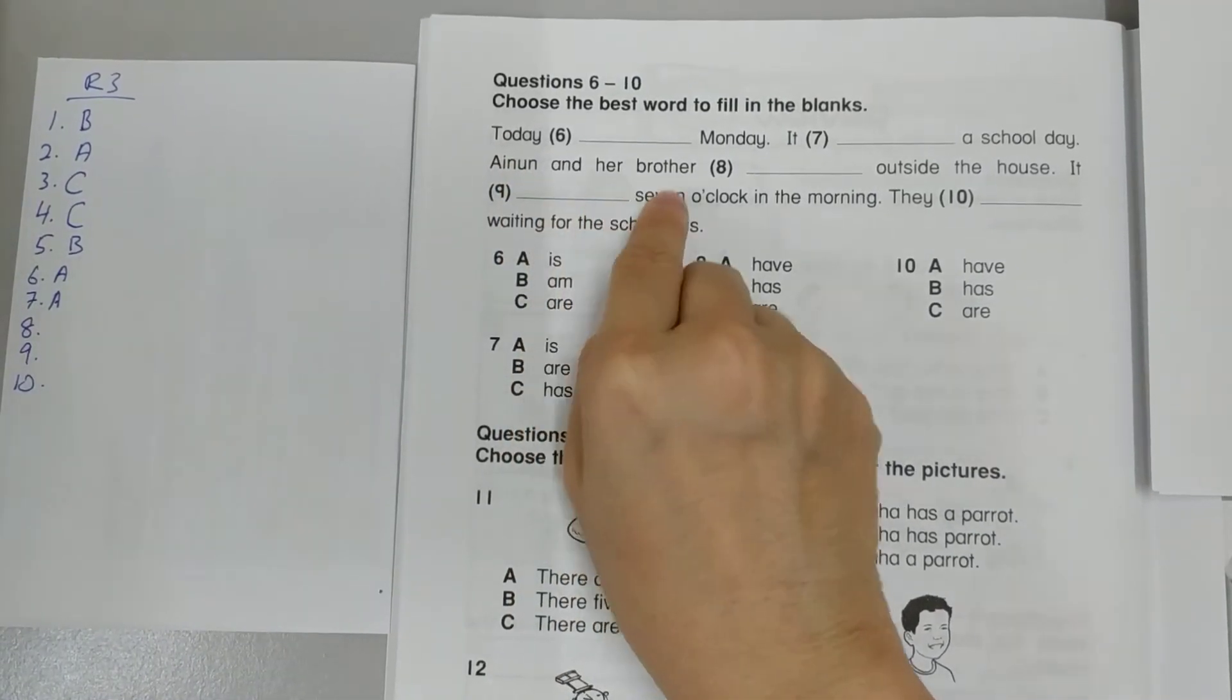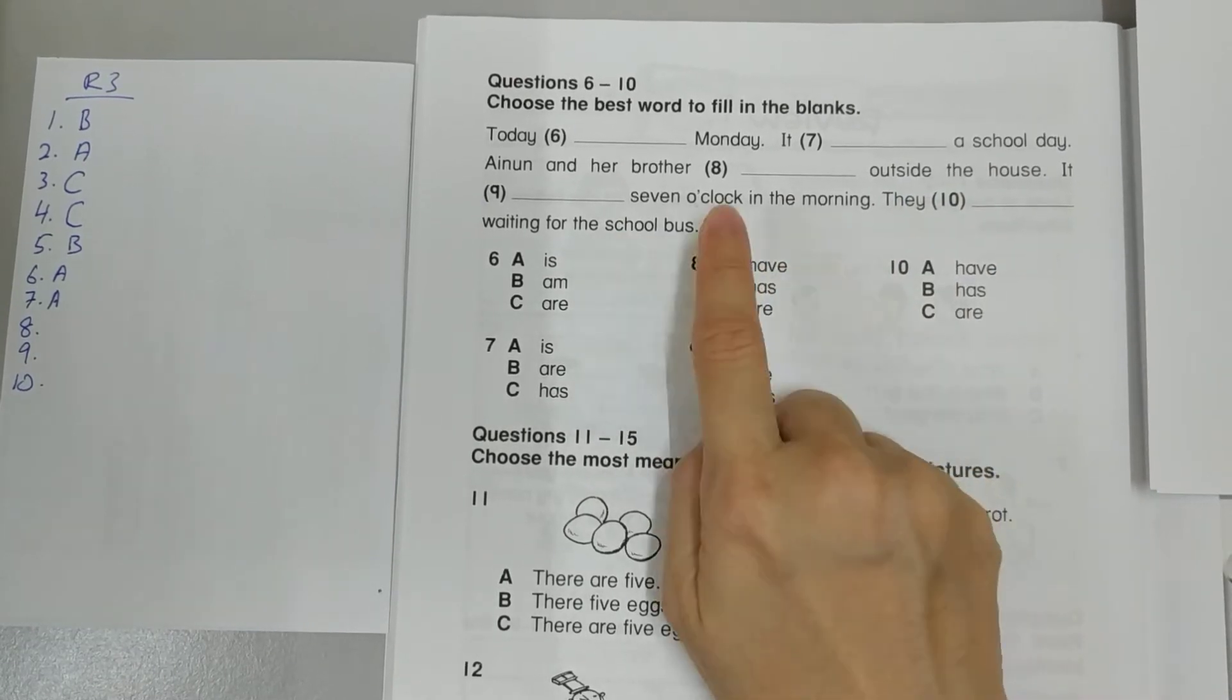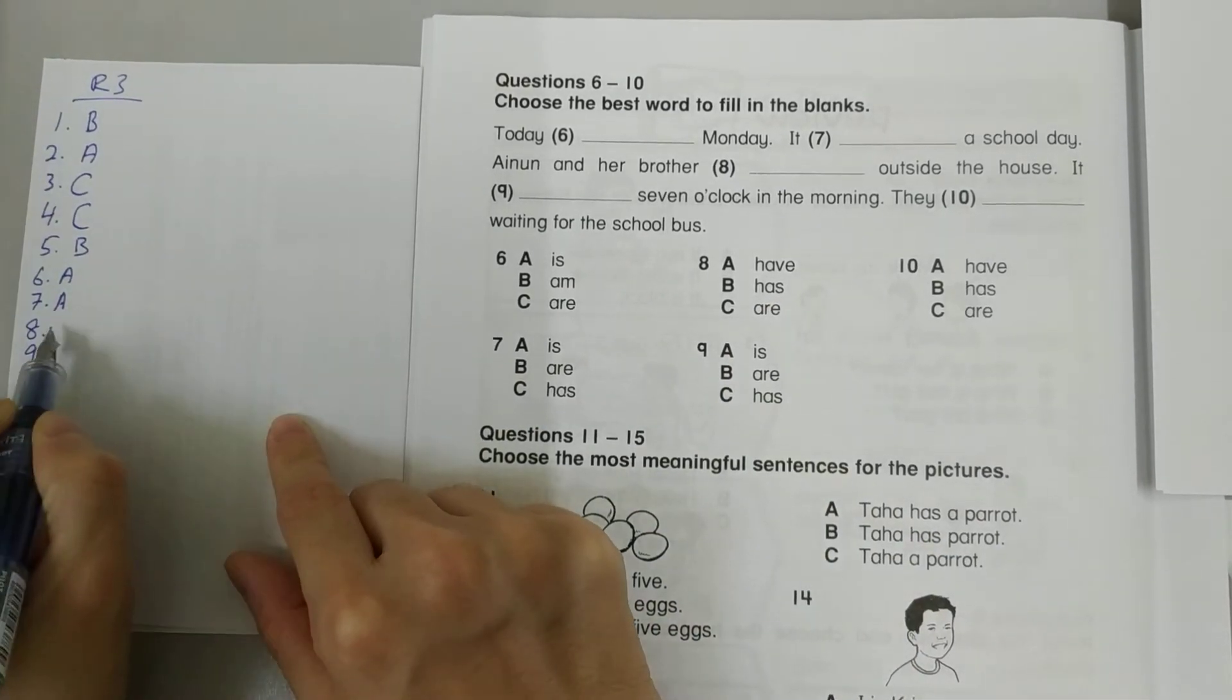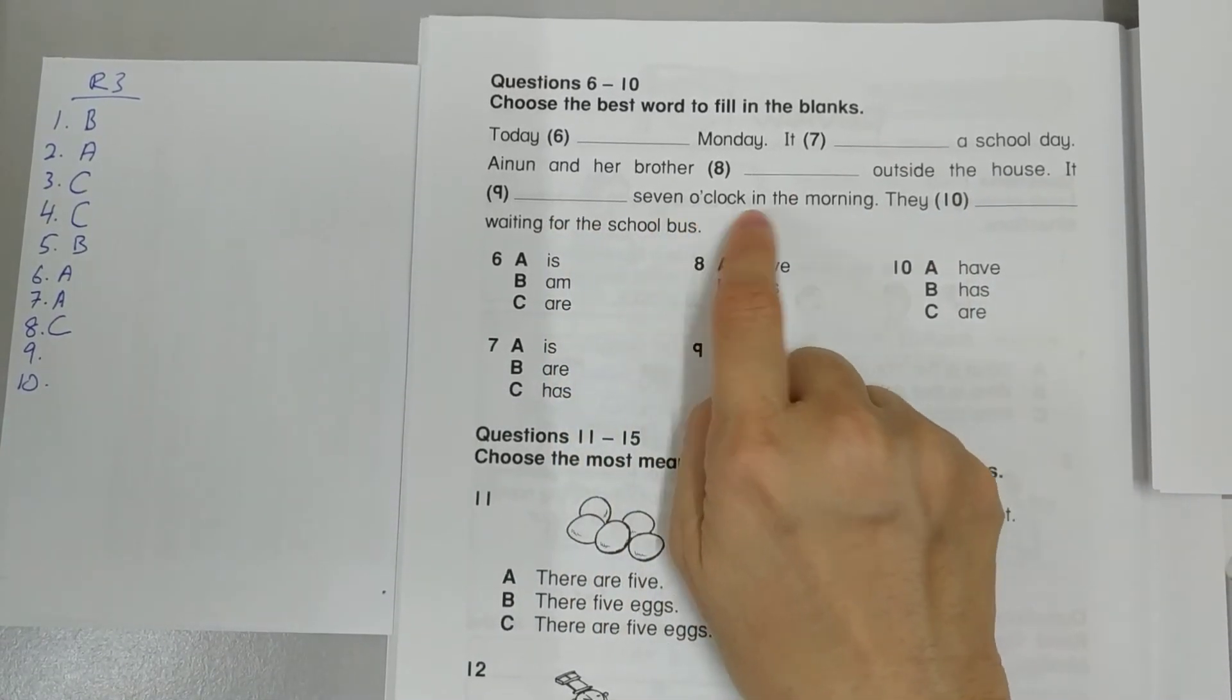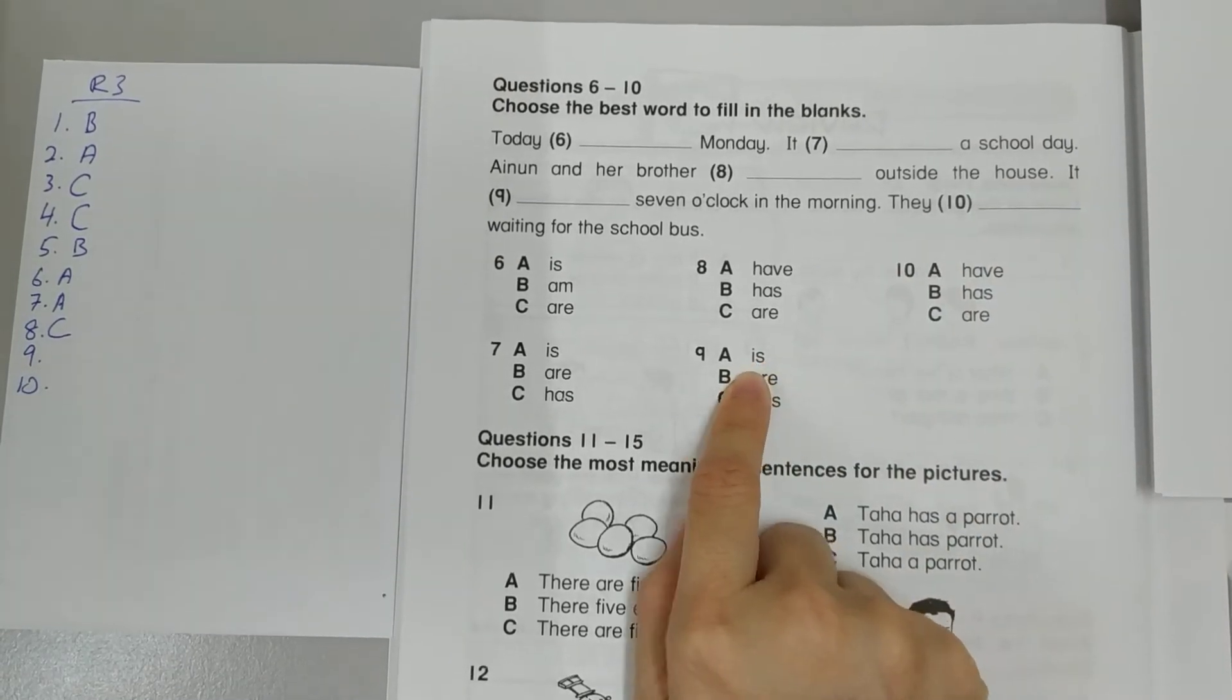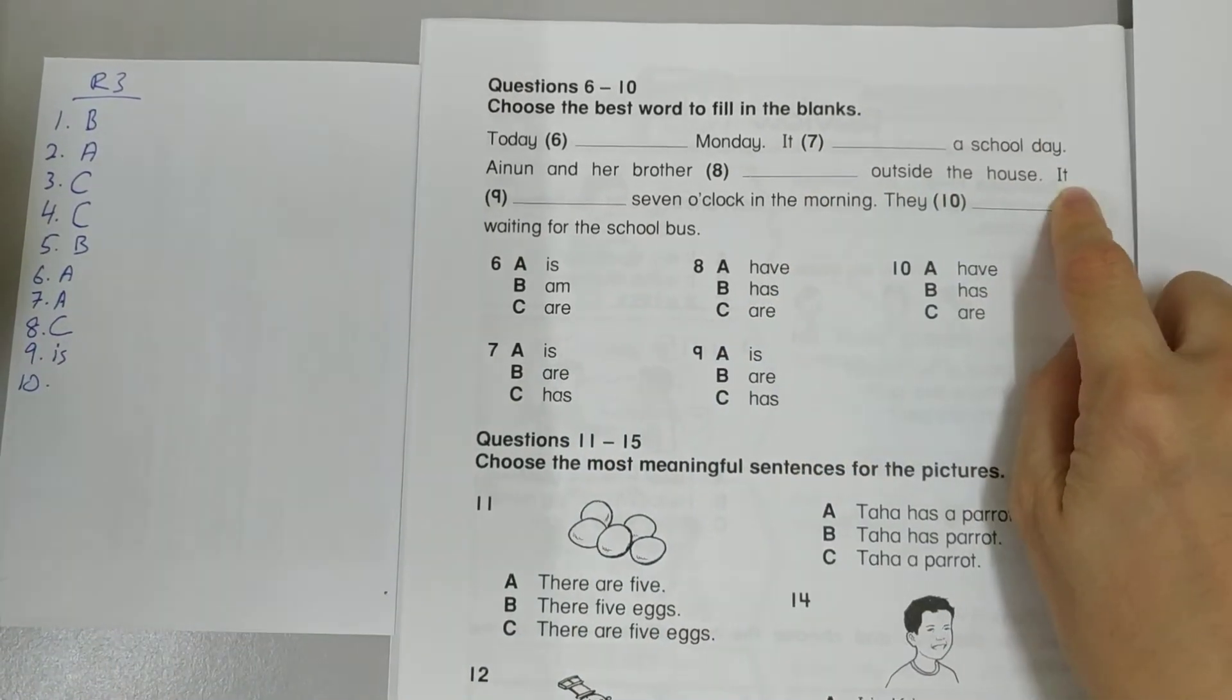I know and her brother something outside the house. So I know and her brother, two of them are outside the house. It is C. It something seven o'clock in the morning. It is seven o'clock. Why? It is singular. It is only one.